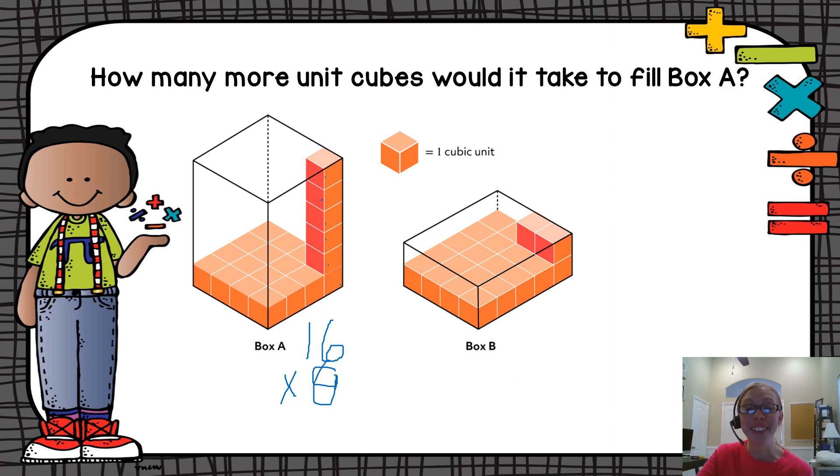There we go. Six times six is 36, so I carry that three. Six times one plus three is nine, so 96 cubes make up Box A and I write that here.